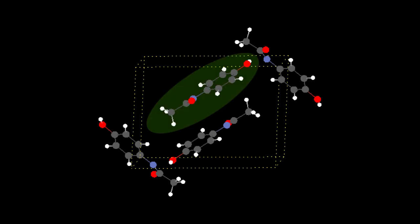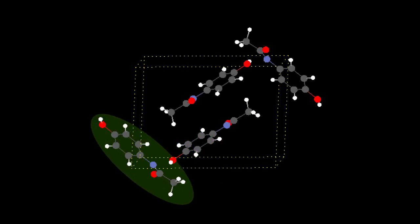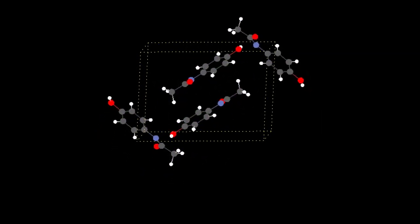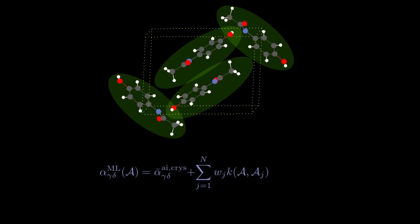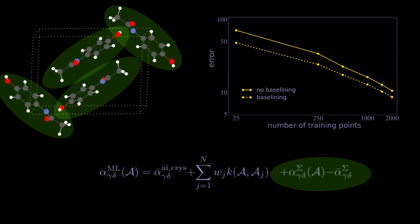Indeed, the polarizability tensors of each individual molecule constituting the crystal can be easily obtained. We can then sum them up and use them as a baseline for GPR, reducing the amount of training points necessary.